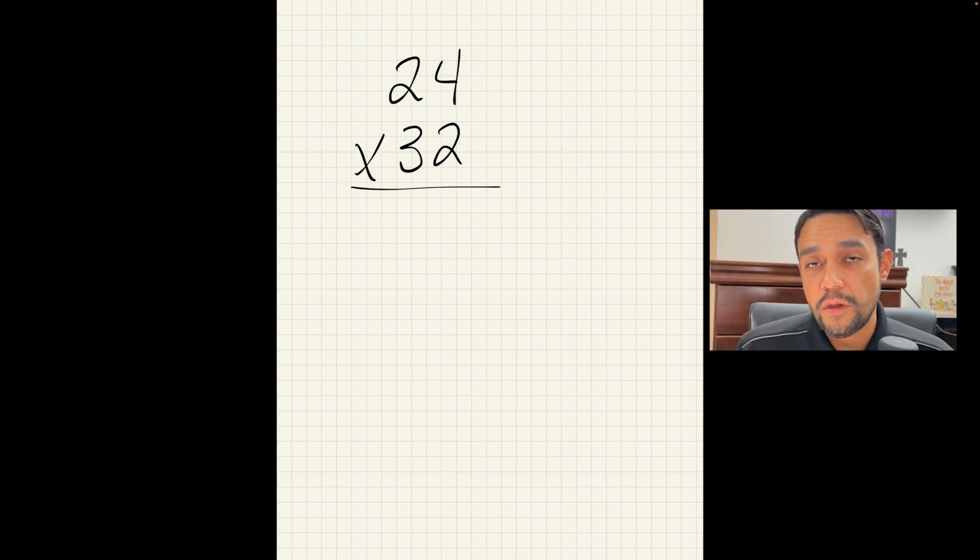The first thing I want you to notice, it didn't matter which number was on top, the bigger or the smaller. It doesn't really matter. Always remember, with multiplication, we're putting groups together. And when we're putting stuff together, we're always starting at the lowest place value at the lowest part.